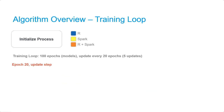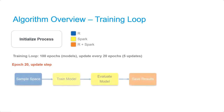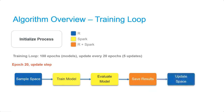Now we're going to jump ahead to our first hyperparameter space update, which occurs at Epoch 20. The first four steps are the same as before: we take a sample, train a model, evaluate it, and save all our results. Next, we'll use the results from the last 20 epochs to perform an update to our hyperparameter space. This will include building our Bayes GLM, pruning the space, and saving results.